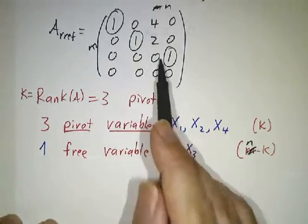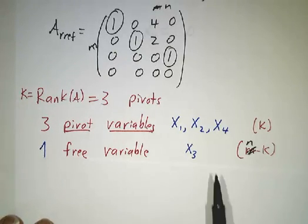Some of the columns have pivots, the rest don't. The columns without pivots correspond to free variables.